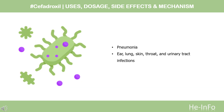What is Cefadroxil used for? It is used for the treatment of the following infections: skin, UTI, and ENT infections caused by S. pneumoniae, H. influenzae, staphylococci, S. pyogenes, group A beta-hemolytic streptococci, E. coli, P. mirabilis, Klebsiella sp., coagulase-negative staphylococci, and Streptococcus pyogenes.